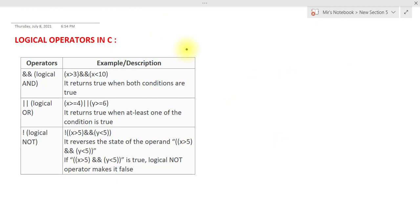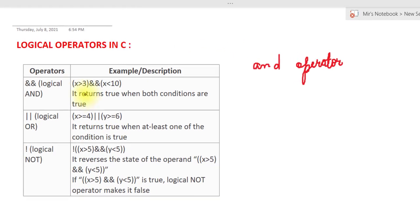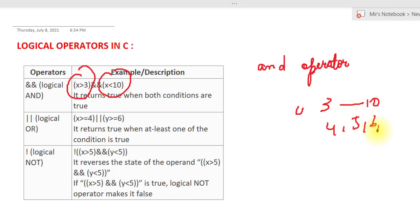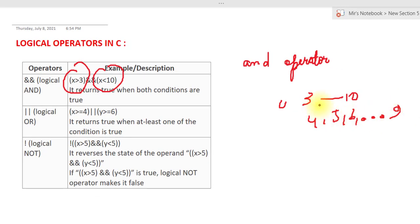These operators are usually used in our conditional statements to implement some sort of logic. The AND operator returns true only if both conditions are true. For example, with the first condition being x is greater than 3 and the second being x is less than 10, this will return true only if x falls in the range between 3 and 10 — so 4, 5, 6, 7, all the way up to 9, excluding 3 and 10.